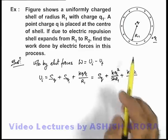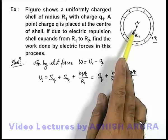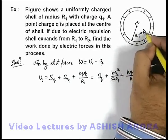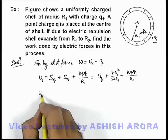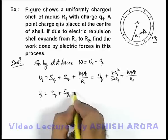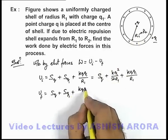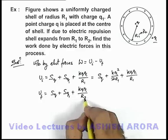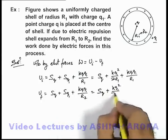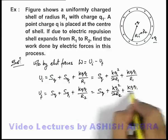Now when the shell is expanded due to the repulsion of its own charge as well as due to the charge at center, and if its radius changes from R₁ to R₂, we can easily find out the final potential energy is Sq plus Sq₁ plus the interaction energy. When the radius becomes R₂ it will be given as kqq₁ by R₂. So this will be Sq plus kq₁² by 2R₂ plus kqq₁ by R₂.